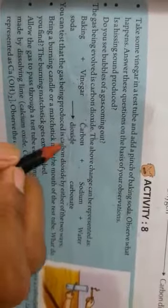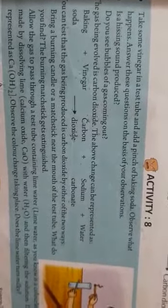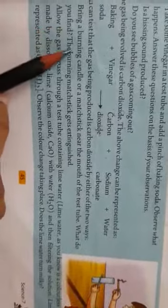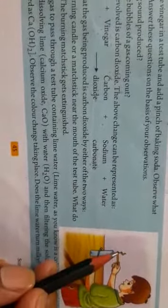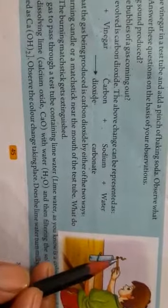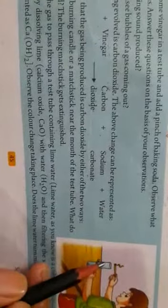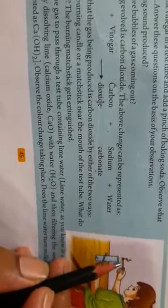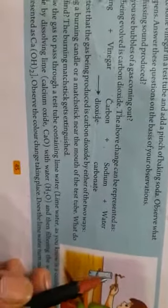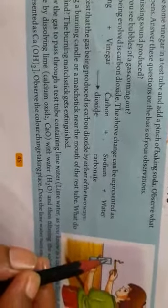To prove which gas has been released — that is, carbon dioxide — there are two methods. First: bring a burning candle or a matchstick near the mouth of the test tube. The burning matchstick gets extinguished. This is because carbon dioxide is an extinguisher — it puts out the flame. This proves that the gas released is carbon dioxide.